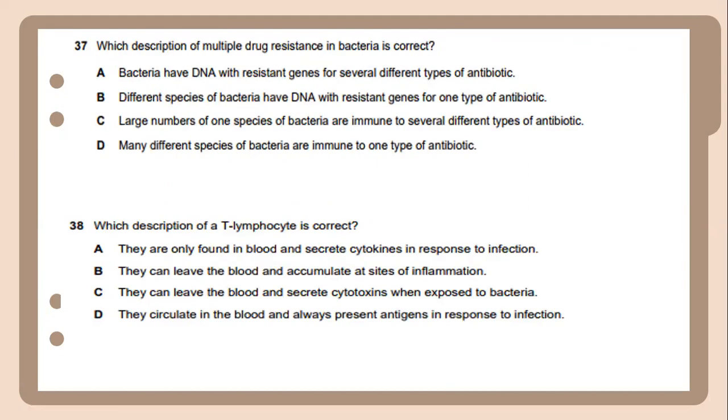Which description of multiple drug resistance in bacteria is correct? The correct description of multiple drug resistance in bacteria is bacteria have DNA with the resistance gene for several different types of antibiotics.